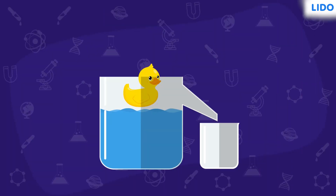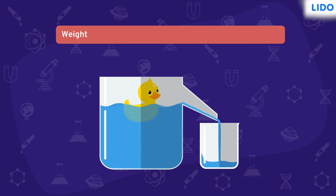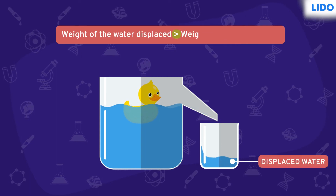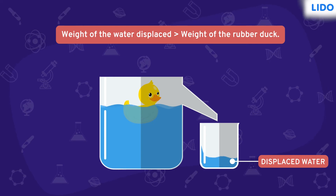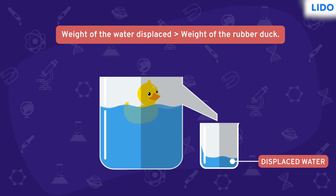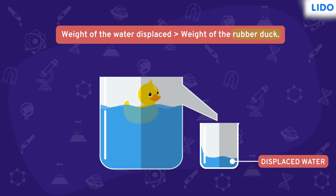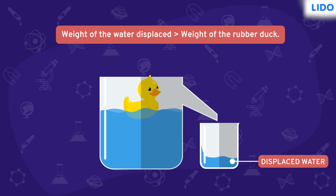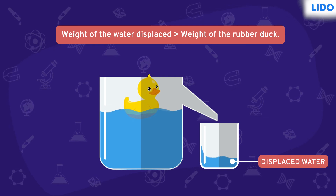In the first case, since the duck is pushed in the water, it displaces more liquid. The weight of the water displaced by the rubber duck is more than the actual weight of the rubber duck. Hence, the duck is pushed upwards and the lesser part of the duck is submerged.